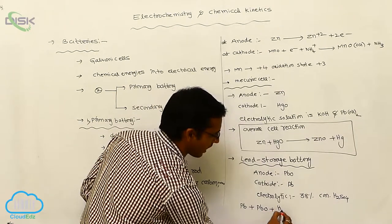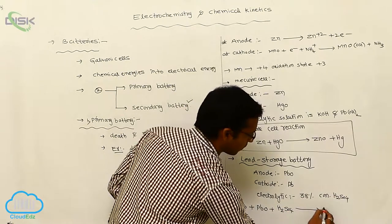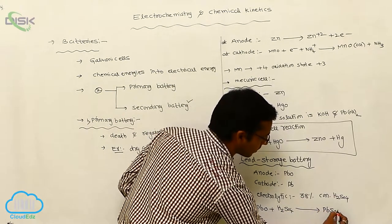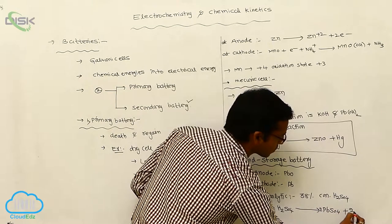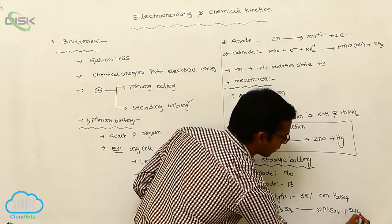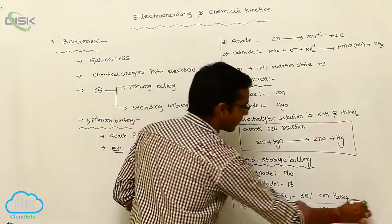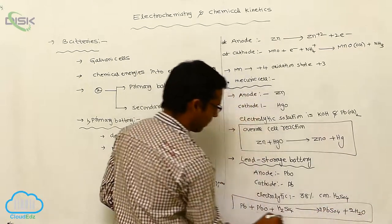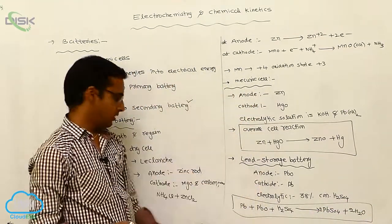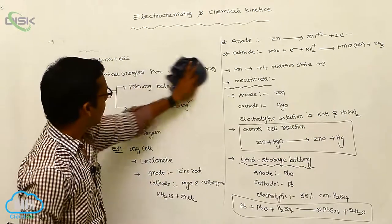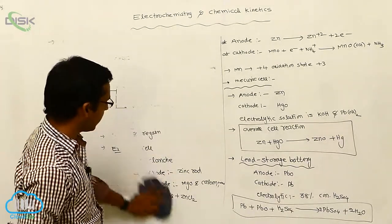In the lead storage battery, the overall cell reaction is: lead plus lead oxide reacting with concentrated sulfuric acid (H₂SO₄) is converted to two moles of lead sulfate and two moles of water. This is the overall cell reaction involved in the lead storage battery, which is an example of a secondary battery.